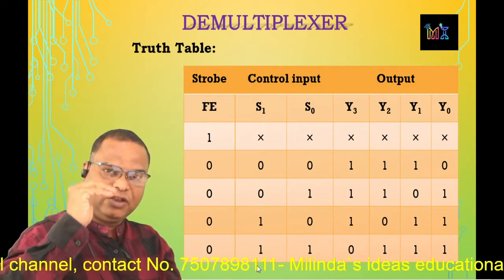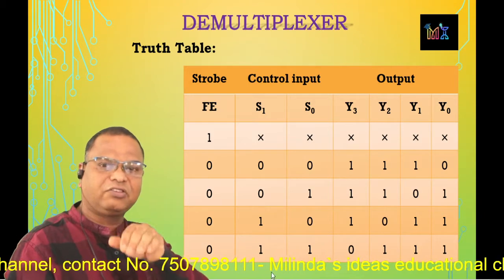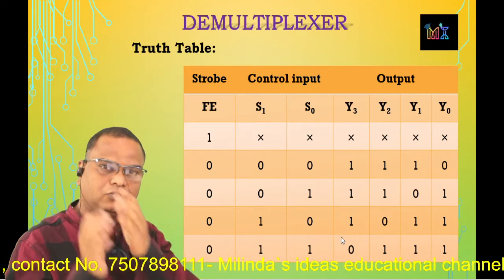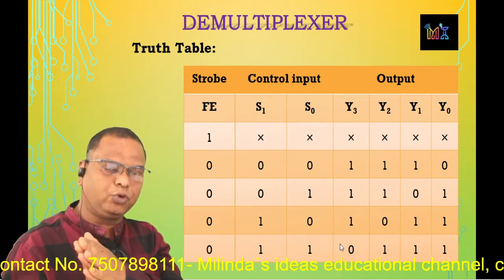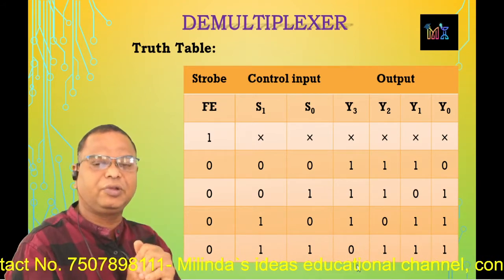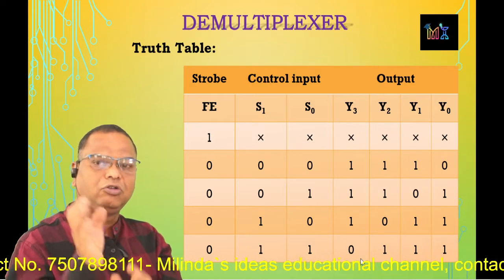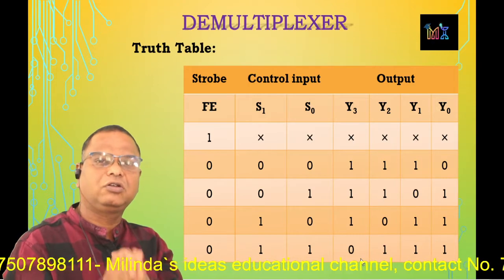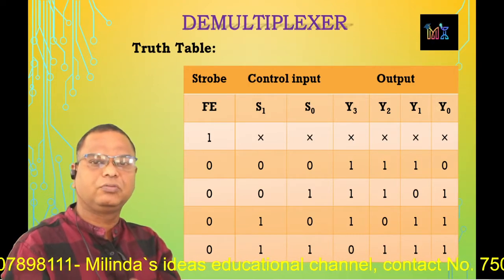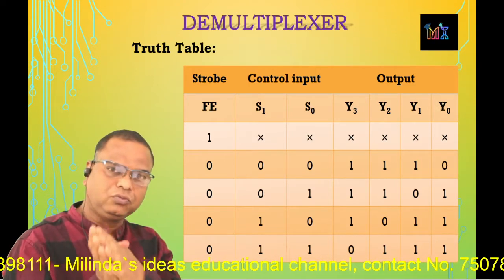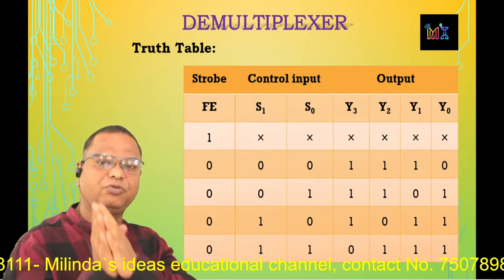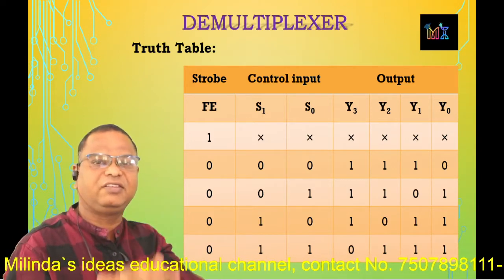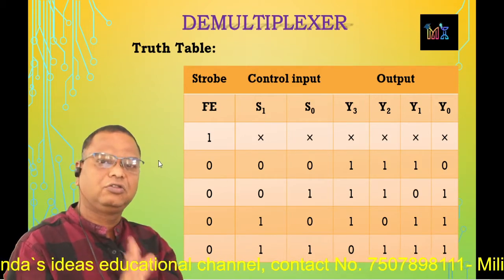When strobe input is low and both S1 and S0 are high (S1=1, S0=1): the data — that is the strobe input — is now connected to the Y3 terminal and Y3 goes low. So whatever the data, it is connected to the selected output terminal using the set of control inputs. That is the 1-to-4 dual demux IC 74139.